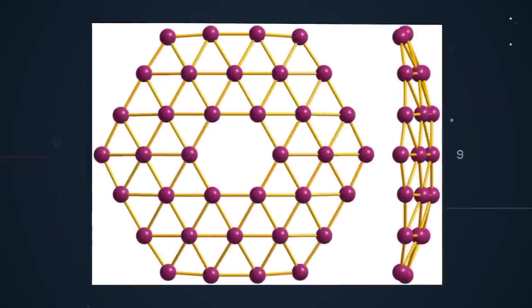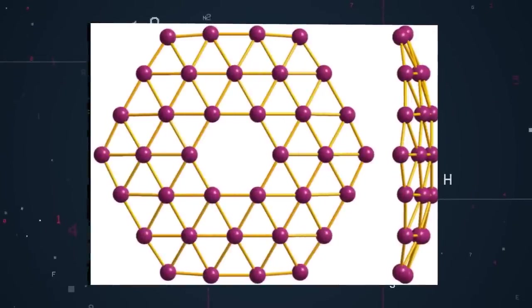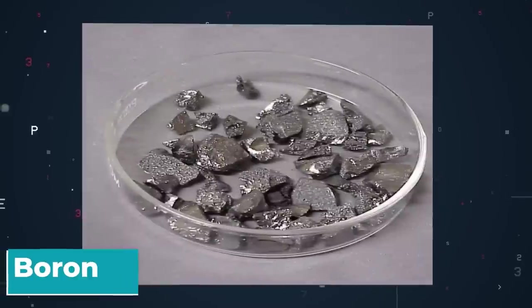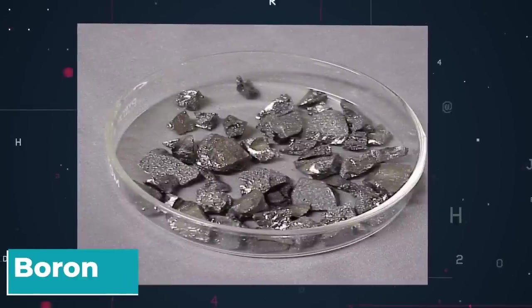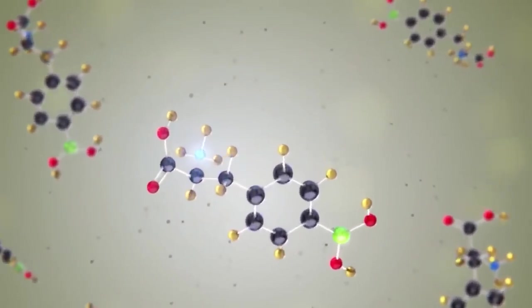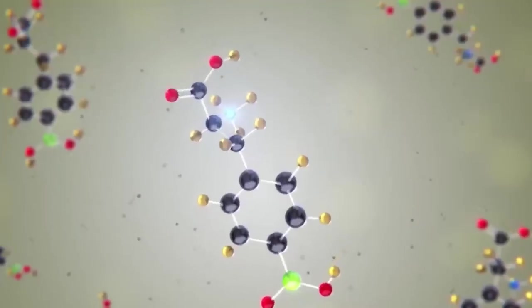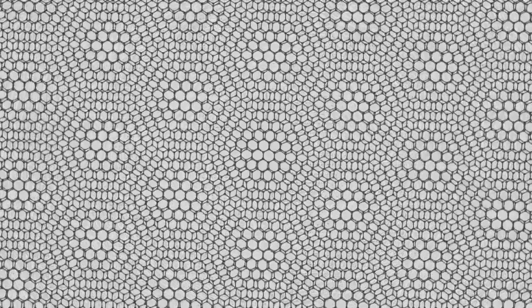This exciting material is two-dimensional atom thin sheets of boron, a chemical element traditionally found in fiberglass insulation. The interesting thing about boron is that while in 3D form, it is a non-metallic semiconductor. But in 2D form, it becomes a metallic conductor.